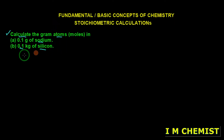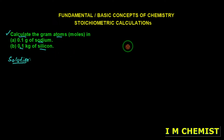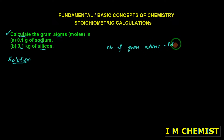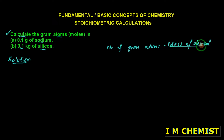We have to find out the gram atoms in this numerical. We will be using the formula: number of gram atoms equals mass of element divided by its molar mass.